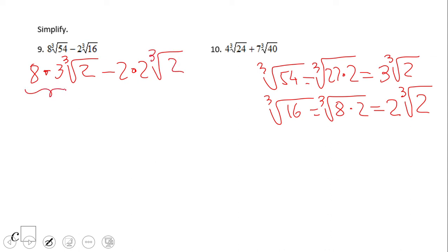So we have here 8 × 3 = 24, 24∛2. 2 × 2 we have 4 here, minus 4∛2. And obviously the last step, we have 24∛2 - 4∛2, that will be 20∛2.